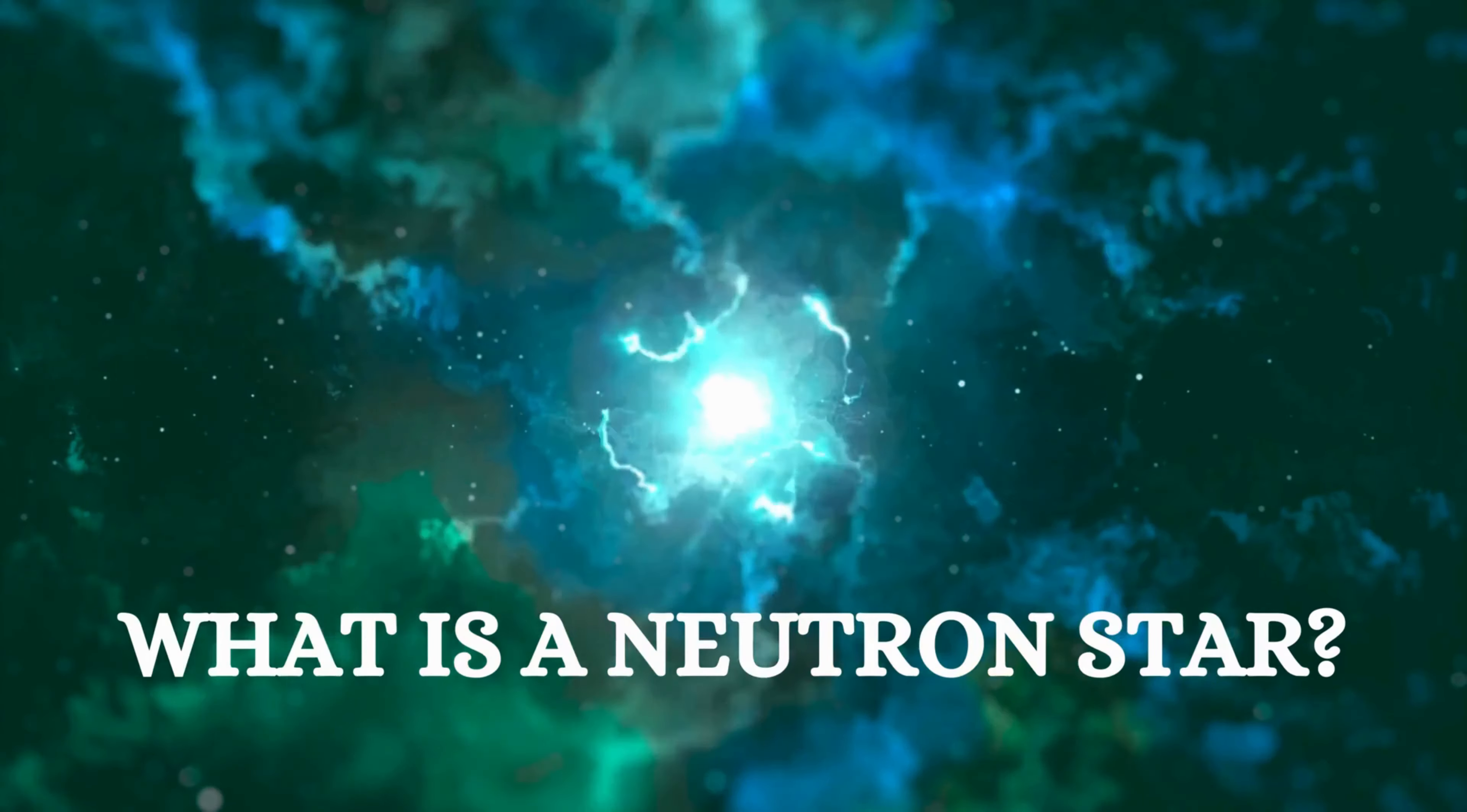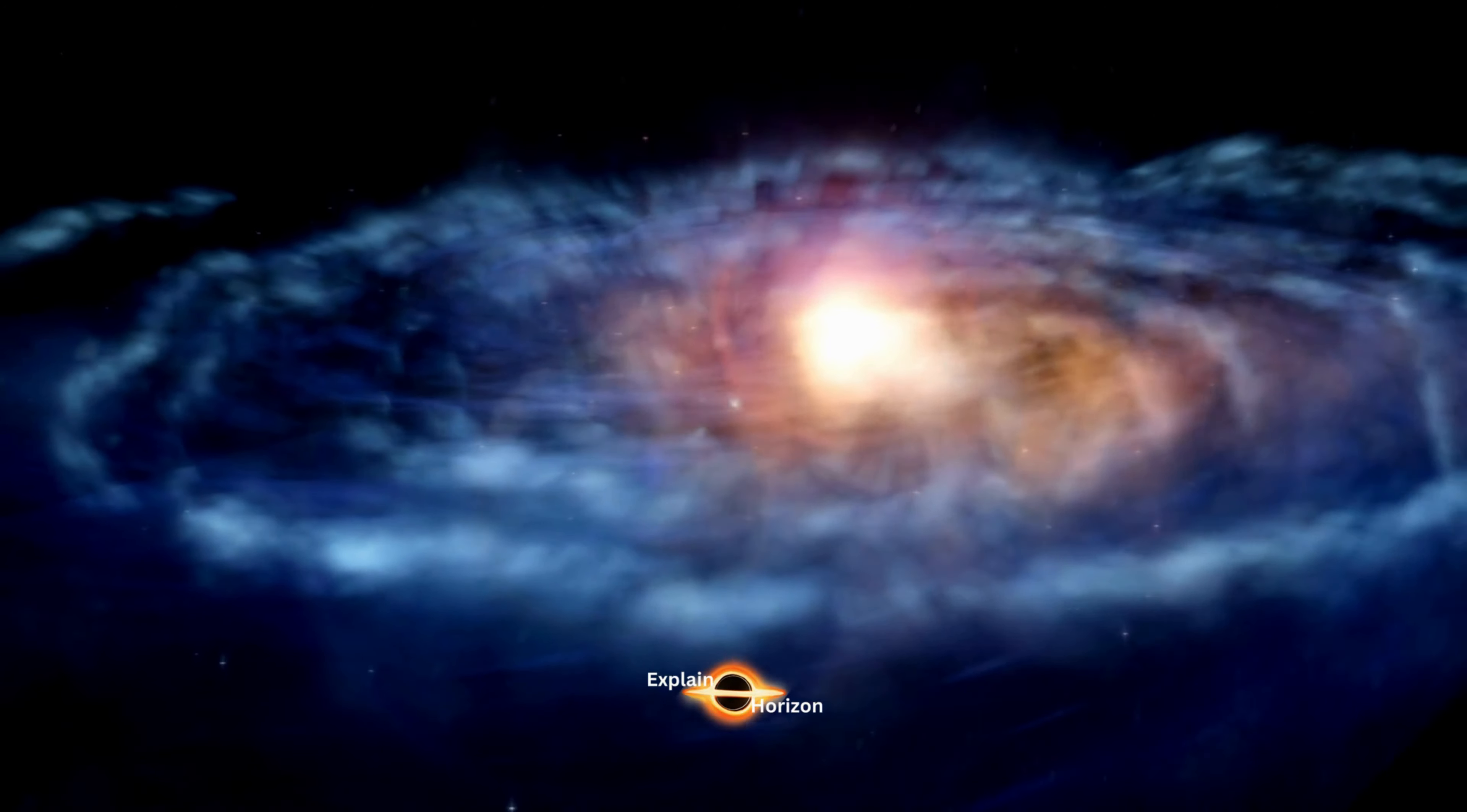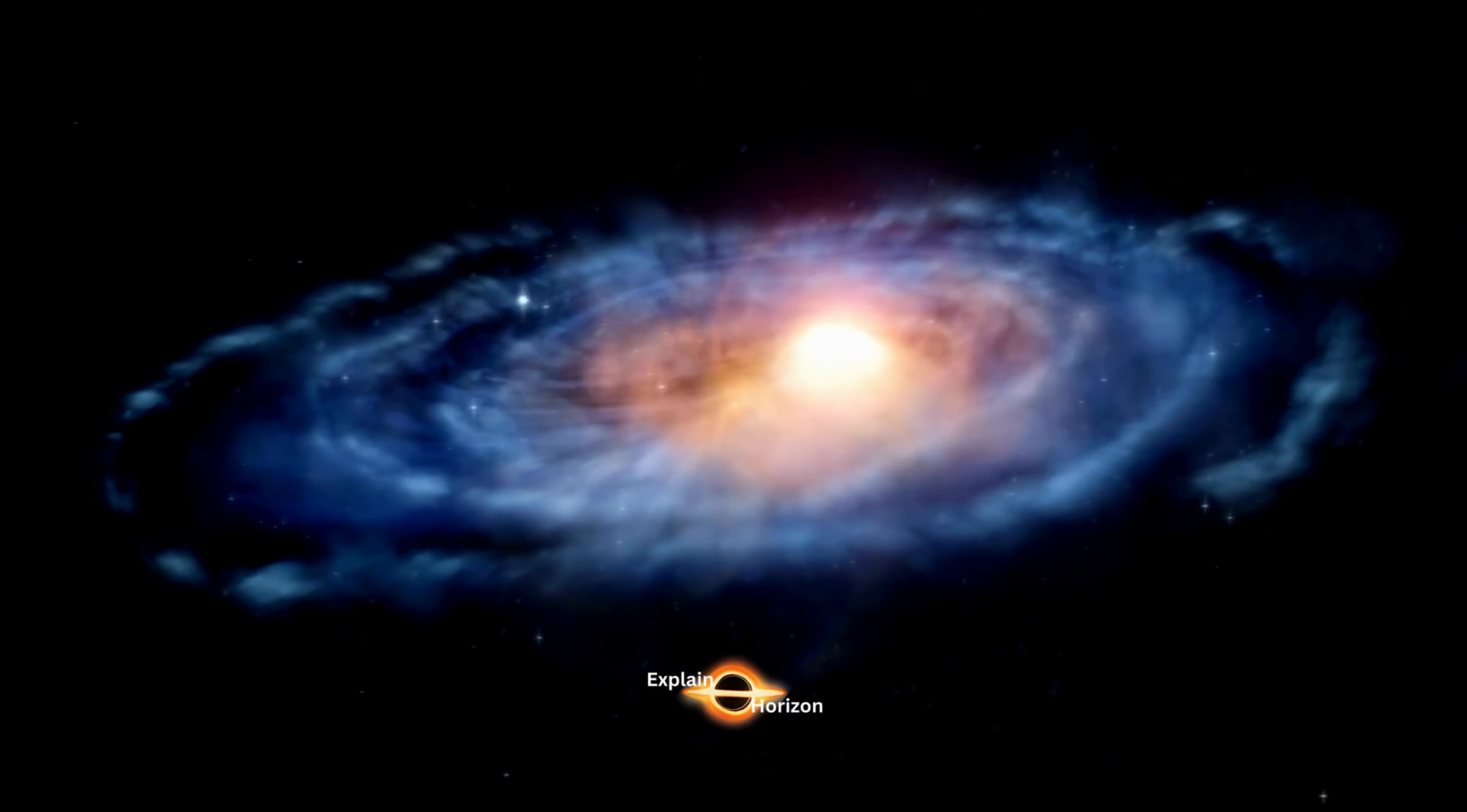What is a neutron star? A neutron star is formed when a massive star undergoes a supernova explosion. The core of the star collapses under its own gravity, leading to the formation of a superdense object called a neutron star.